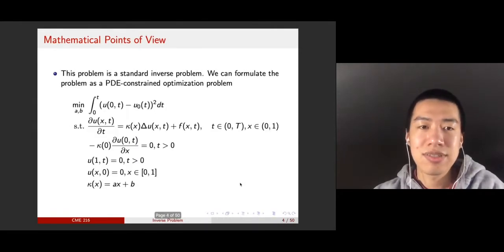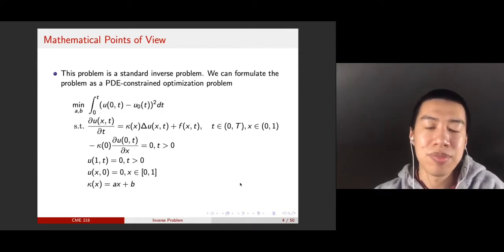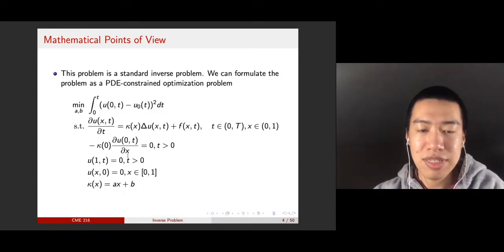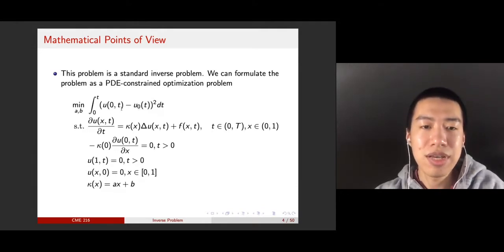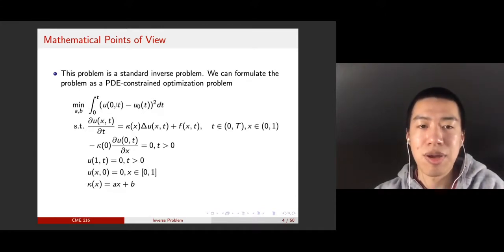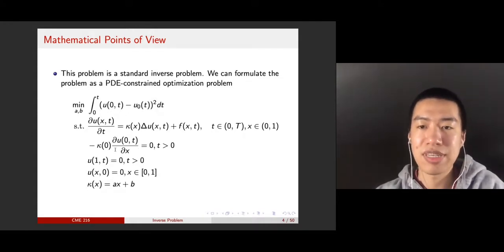So, how did we do that? We formulate this problem as a PDE-constrained optimization problem, where the constraint is the PDE itself, with boundary conditions and initial conditions. The objective function is simply the discrepancy between our measurement u0 and the hypothetical output of the PDE system. Because we have a continuous system, we use an integral to describe the discrepancy. This is the mathematical formulation of the PDE-constrained optimization problem.